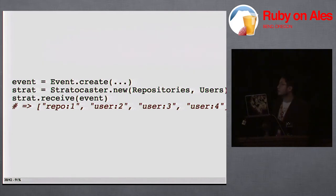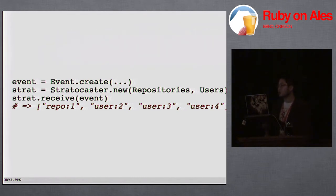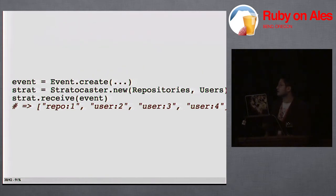Here's the code we actually use to store it in Stratocaster. We create our event like normal in ActiveRecord. I made Stratocaster basically database-agnostic — my goal is to support ActiveModel, so as long as you have an ID and some other simple things that all ActiveModel objects use, it'll work. We create a Stratocaster instance, pass in the timeline definitions, Stratocaster receives the event, goes through those timeline classes, spits out the timelines it found, and then inserts that event to those timelines.